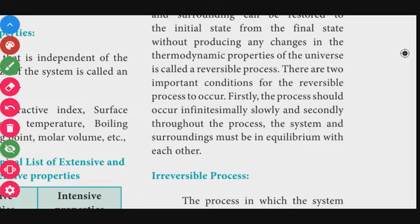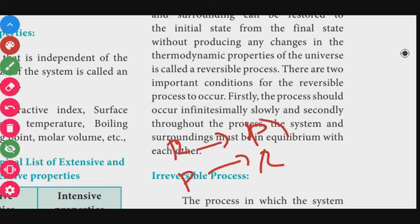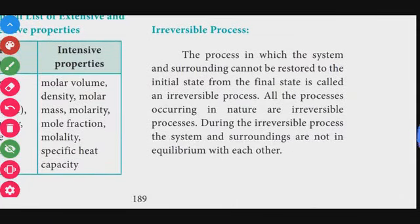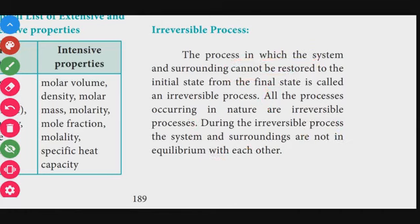In a reversible process, reactants convert to products and products can convert back to reactants without any changes in thermodynamic properties. An irreversible process is one in which the system and surroundings cannot be restored — the process goes from initial to final, but final to initial is not possible. All processes occurring in nature are irreversible. During an irreversible process, the system and surroundings are not in equilibrium with each other.